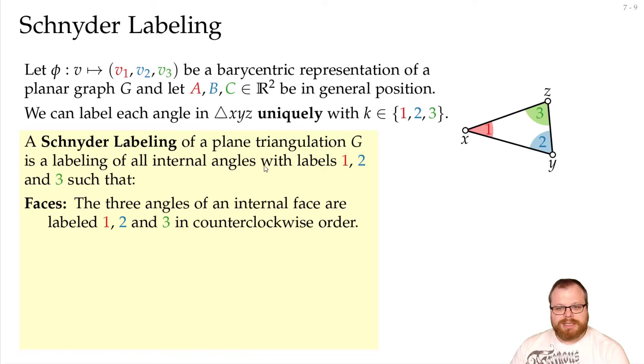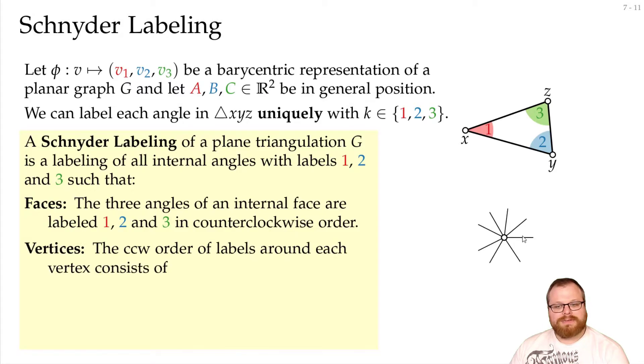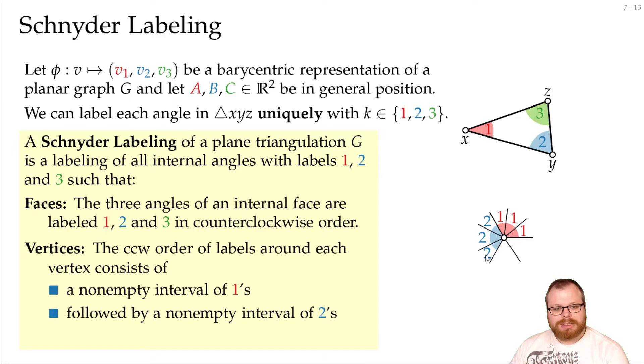So, x is closer to a, this closer to b, and this to c. We cannot have a, then c, then b. Also, for every vertex, if we look at the angles around it, then we first must have some 1 angles, then we must have some 2 angles, and then we must have some 3 angles. So, this vertex is closer to a than these neighbors, it's closer to b than these neighbors, and it's closer to c than these angles.